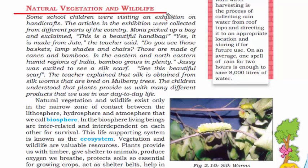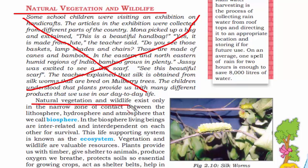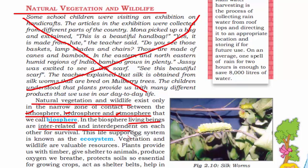The last topic of this chapter is natural vegetation and wildlife. When we say natural vegetation and wildlife, we mean the biosphere — the sphere where the lithosphere (land), hydrosphere (water bodies), and atmosphere come in close contact. In all three zones we have living beings, interrelated for survival. For example, humans live on land but need air from the atmosphere and water from the hydrosphere. This life-supporting system is known as the ecosystem.